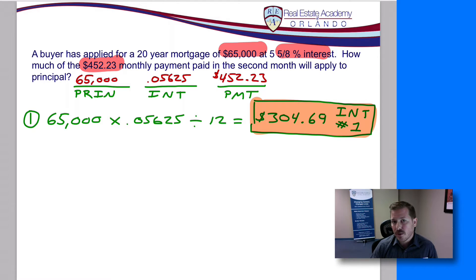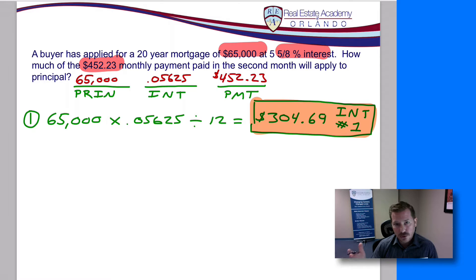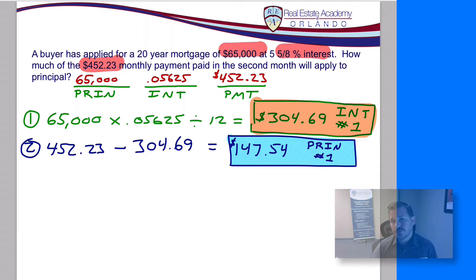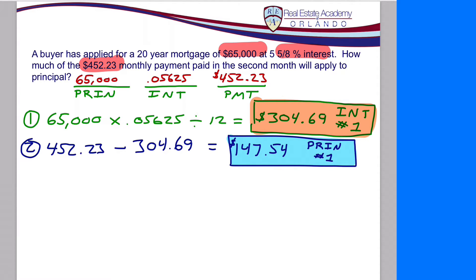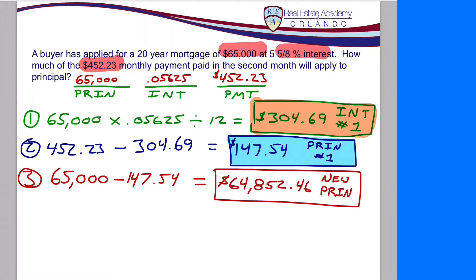They told us our monthly payment was $452.23. We just figured out that $304.69 of that was applied to interest. So how much was applied to principal? We take the monthly payment of $452.23, subtract out the interest payment of $304.69, and the balance — $147.54 — is applied to the principal reduction. That leaves us with a new principal balance of $64,852.46.